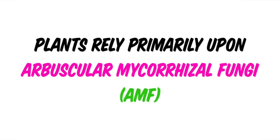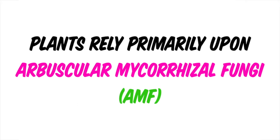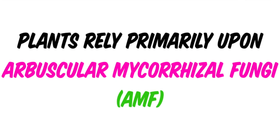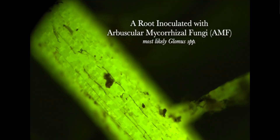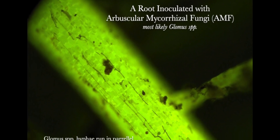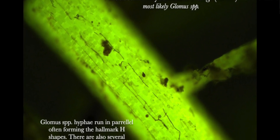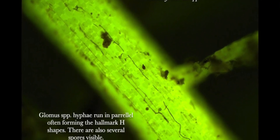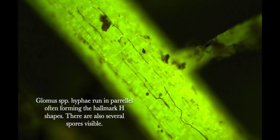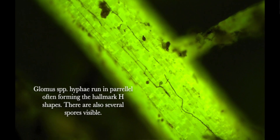Plants rely primarily upon arbuscular mycorrhizal fungi — AMF. It partners with the roots and it's really ephemeral. It comes in days and weeks, then goes and leaves little spores — it's symbiotic. It relies upon the roots and this relationship, releasing those spores and then reconnecting with that same root right there.